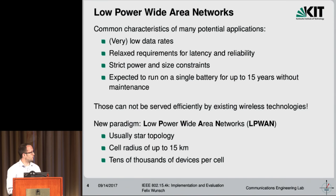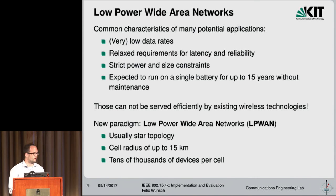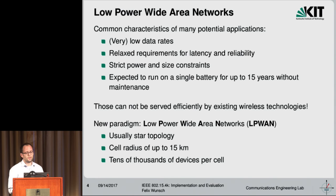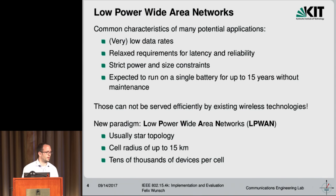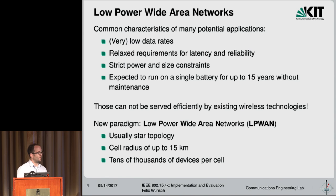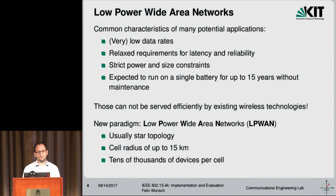These networks are usually a star topology and have huge coverage areas with a cell radius of up to 15 kilometers, even more in rural areas. They are not used to connect just 10 or 100 or 1,000 devices — even the most modest estimations say there are tens of thousands of devices per cell to be connected, some sources even saying a million.